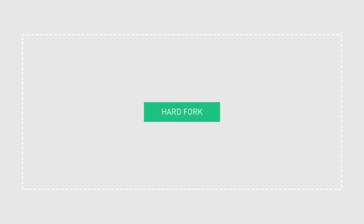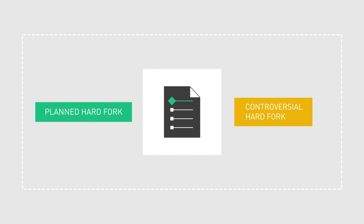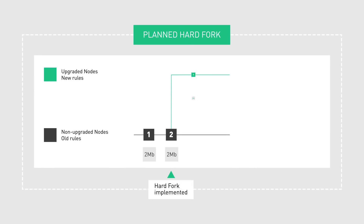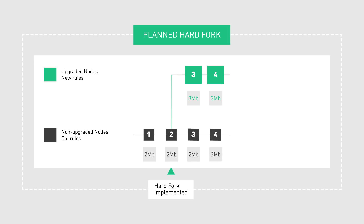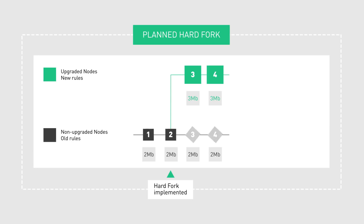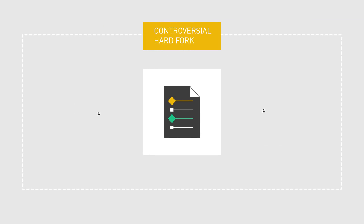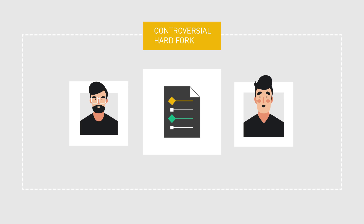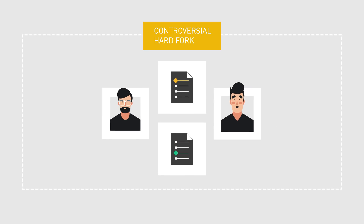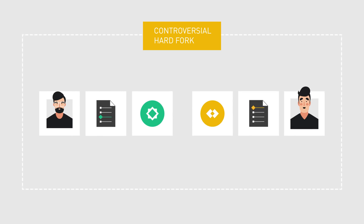Depending on the situation, hard forks can either be planned or controversial. In a planned hard fork, participants voluntarily upgrade their software to follow the new rules, leaving the old chain behind. The ones who don't update are left mining on the old chain, which very few people will be using. But if the fork is controversial, meaning that there is a disagreement within the community about the upgrade, the protocol is usually forked into two incompatible blockchains — two different cryptocurrencies. Both blockchains will have their own community, and the developers will progress in the way that they believe is best.